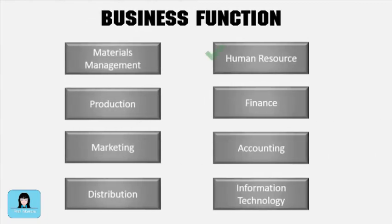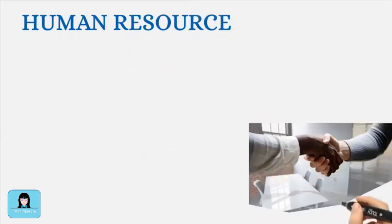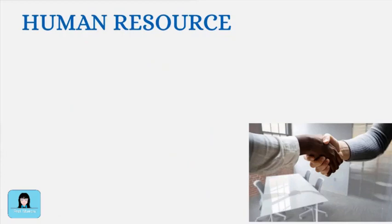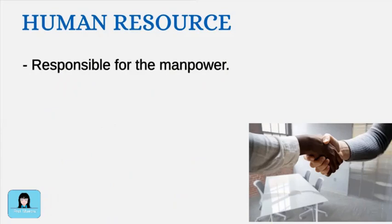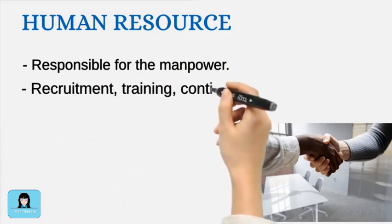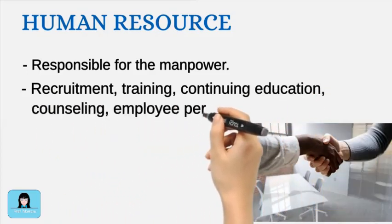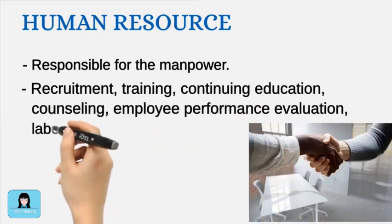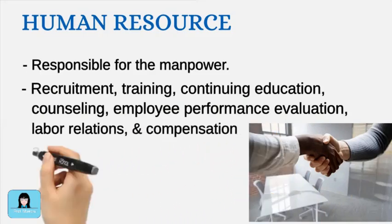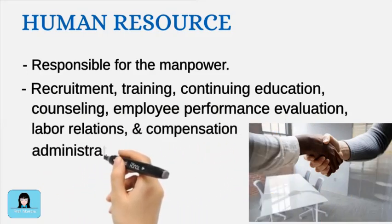The business function directly associated with labor is human resource. Competent and reliable employees are a valuable resource for a business. The objective of the human resource function is to effectively manage this resource. A well-developed personnel function includes recruiting, training, continuing education, counseling, employee performance evaluation, labor relations, and compensation administration.